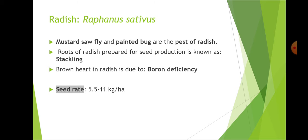Origin of radish is India. Japanese radish originates from Japan and European radish from the Mediterranean region. Mustard sawfly and painted bug are the pests of radish. Roots of radish prepared for seed production are known as stecklings.